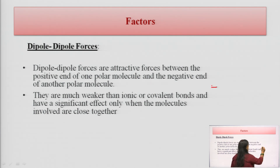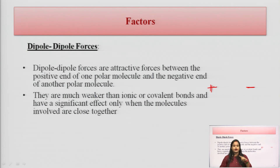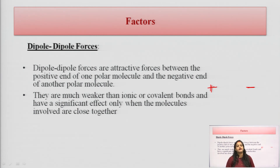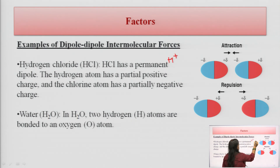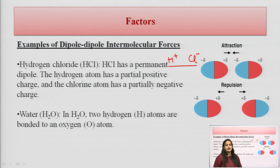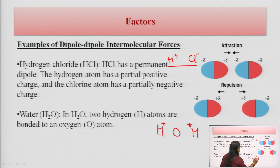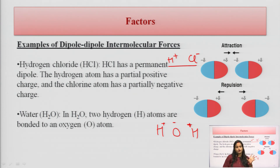In a polar molecule, one end has a positive charge and the other has a negative charge, and they attract each other. These forces are much weaker than ionic or covalent bonds and have a significant effect only when the molecules are close together. Examples of dipole-dipole forces include HCl, where H has a positive charge and Cl has a negative charge — this dipole force is permanent. Similarly, in water (H2O), H has a positive charge and O has a negative charge, and dipole-dipole forces are present.